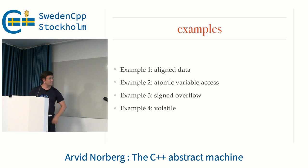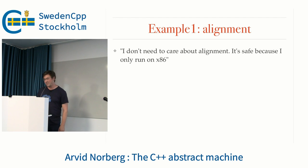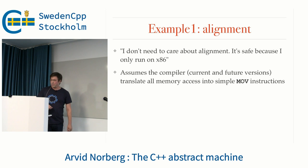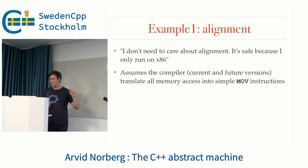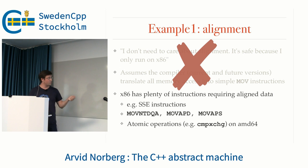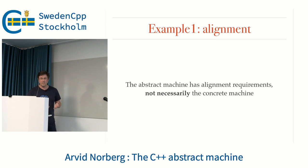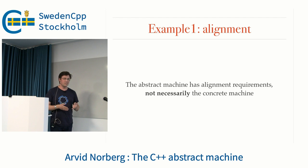I'm going to briefly go through a few examples of statements you might have heard. Here's one: "I don't need to care about alignment. It's safe because I only run on x86, and we all know that x86 doesn't require memory loads and stores to be aligned." This assumption is incorrect because it assumes that the compiler will always generate plain move instructions for all your stores. But the x86 instruction set has plenty of move instructions that do require alignment — for example, atomic operations and essentially all SSE instructions have alignment requirements.